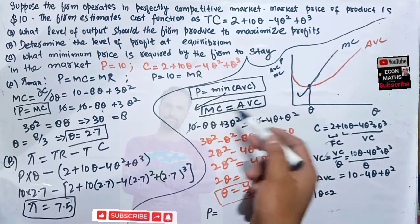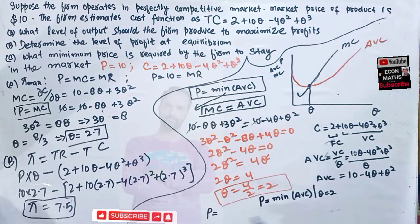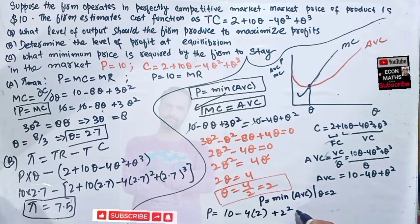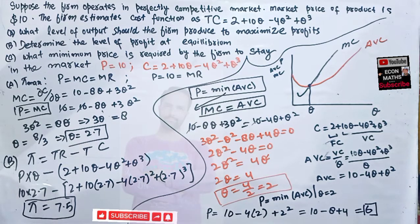The minimum price for the firm to stay in the market equals the minimum AVC, evaluated at Q equals 2. Plugging into AVC: price equals 10 minus 4(2) plus (2 squared), which is 10 minus 8 plus 4, giving us 6. So the minimum price at which the firm can stay in the market is $6.